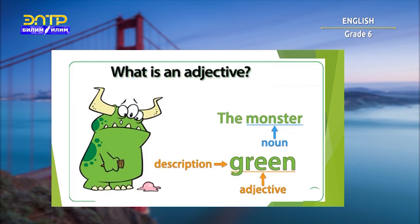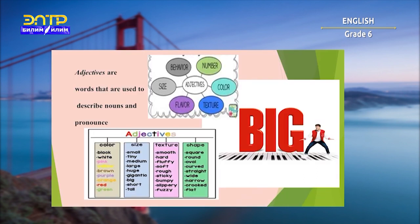Look here, please. This is the monster. The monster is a thing. The monster is a noun, and there is a description of the monster: the green monster. Green is an adjective. Adjectives describe color, size, number, texture, flavor, shape, behavior.